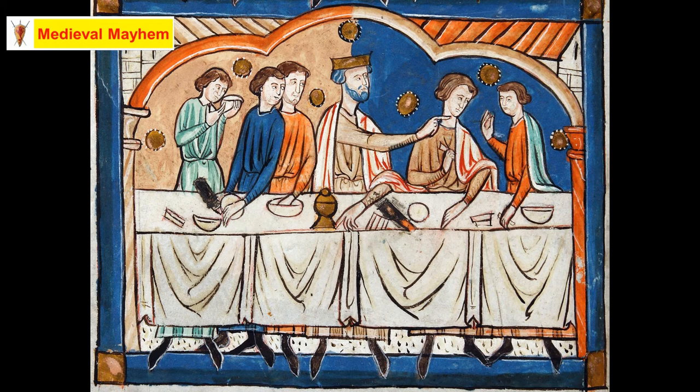Edward the Confessor saw this as a test of power and managed to enlist the support of Siward, Earl of Northumbria, and Earl Leofric, who was Earl of Mercia. Godwin and his sons were exiled from the kingdom in September 1051. Godwin and his wife Gytha, his sons Sweyn, Tostig, and Gyrth, sought refuge in Flanders. While his sons Leofwine and Harold fled to Dublin, where they gained the shelter and help of the king of Leinster.